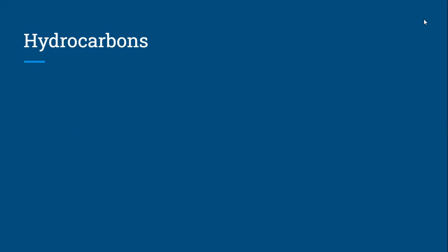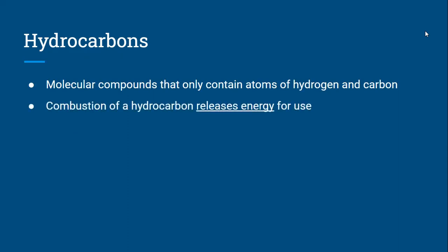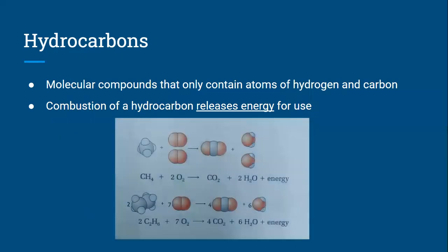Petroleum is separated into fractions of mixtures of hydrocarbons. A hydrocarbon is a molecular compound that only contains hydrogen and carbon. Combustion of that hydrocarbon will release energy, which makes it incredibly useful. This is a picture showing energy as a product in a chemical equation — these are both combustions of hydrocarbons, which you might recognize from our unit on reactions.